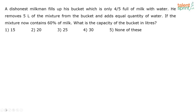A dishonest milkman fills up his bucket with only four-fifths full of milk and the rest with water. He removes five liters of the mixture from the bucket and adds an equal quantity of water. If the mixture now contains 60% of milk, what is the capacity of the bucket in liters?